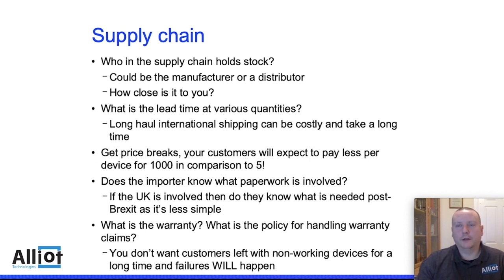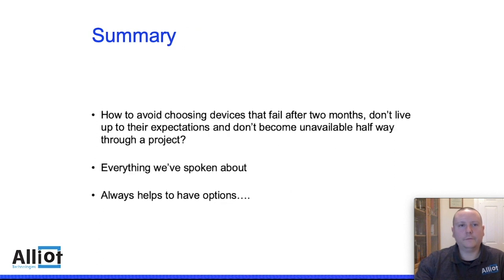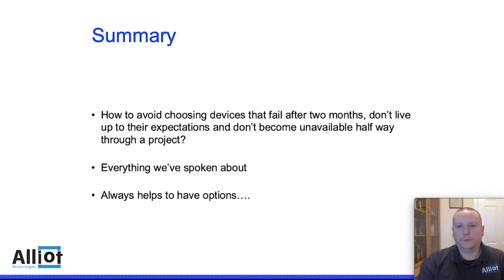What's the warranty on the device as well? This is often overlooked — how does the warranty get handled? Unfortunately things will fail from time to time, and does the manufacturer have a decent process for handling that? To summarise: what you should be thinking about is how to avoid choosing devices that are just going to fail, don't do what they're supposed to do, or suddenly aren't available when your customer wants to order 5,000 of them. It's everything we've spoken about. And as a last point: it always helps to have options. Find multiple suppliers — if you're searching for a CO2 sensor for indoor air quality monitoring, have a couple of different options. Have a preferred one and then have a backup plan in case something goes wrong.